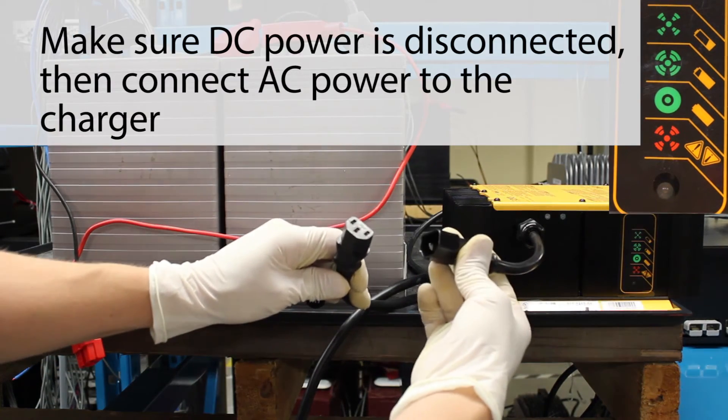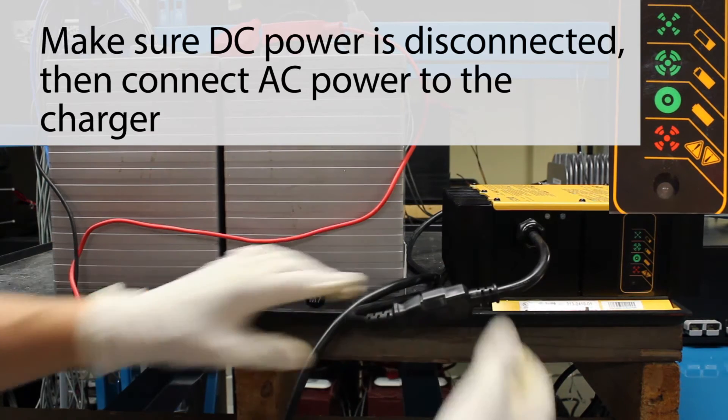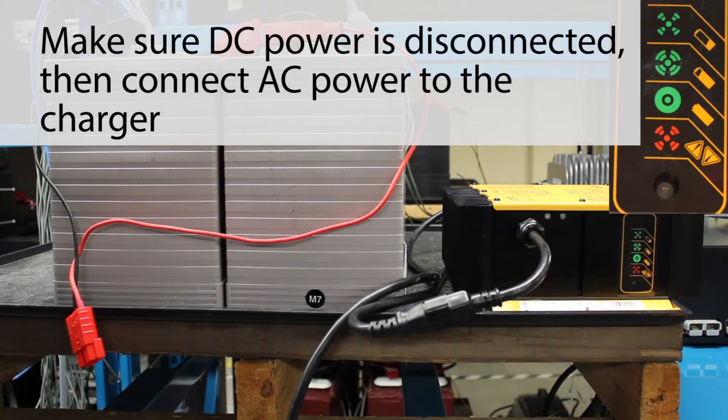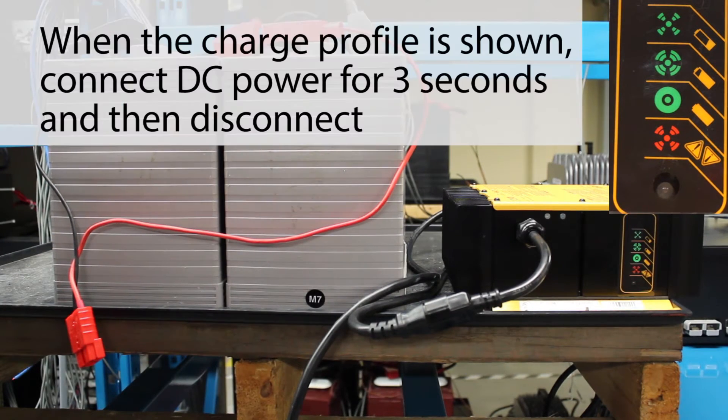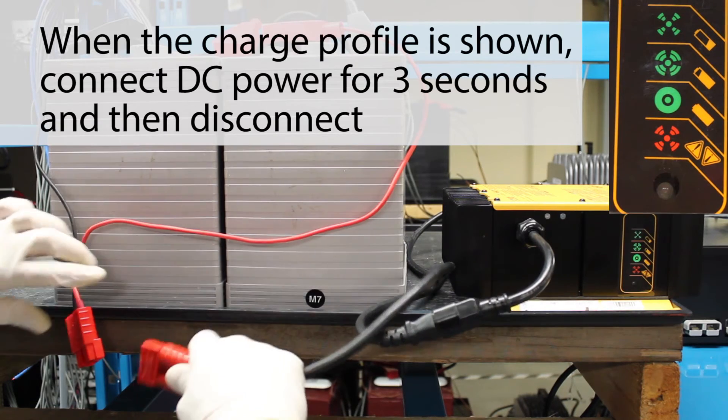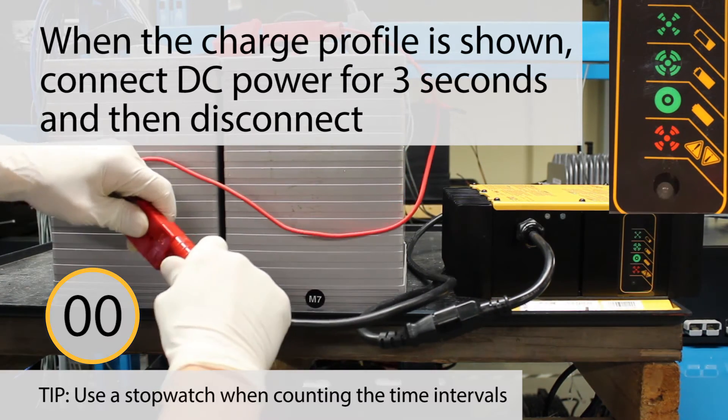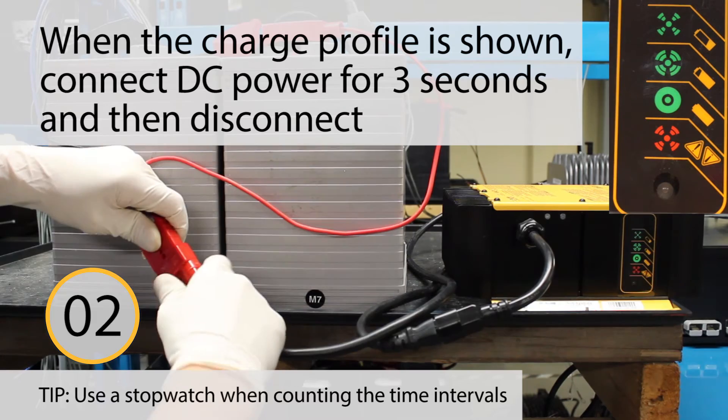Make sure the DC power is disconnected, then connect AC power to the charger. Connect DC power for 3 seconds, then disconnect to advance to the next charge profile.